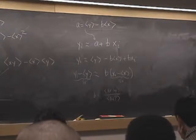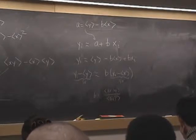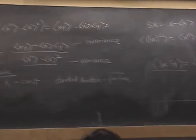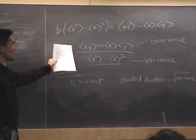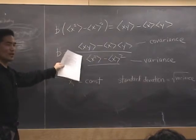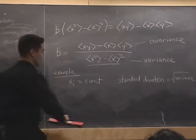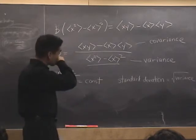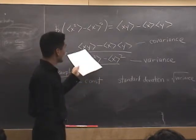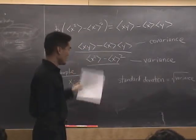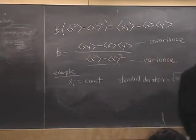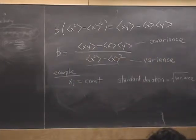So that comes up over and over again in linear modeling. There is some intuition behind this formula. Remember, the covariance measures whether or not these variables are fluctuating together.